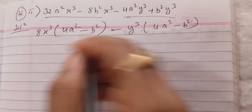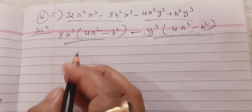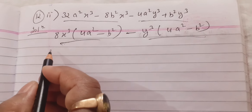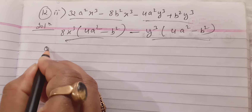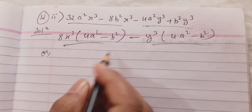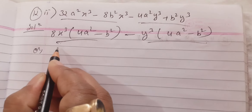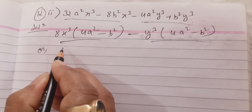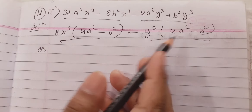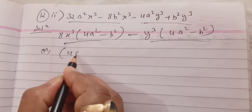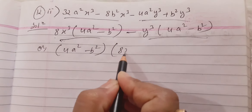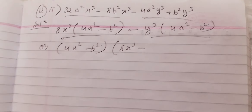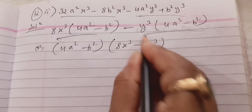From both groups, we are applying the first and second methods of exercise 4.1 and 4.2 — methods named as taking common factors and grouping. From these two groups, I can take 4a² minus b² as common. In the first group only 8x³ will be left, and in the second group there is minus y³.